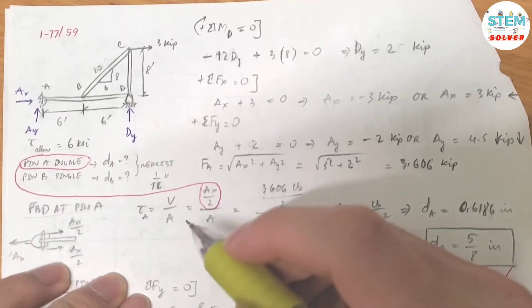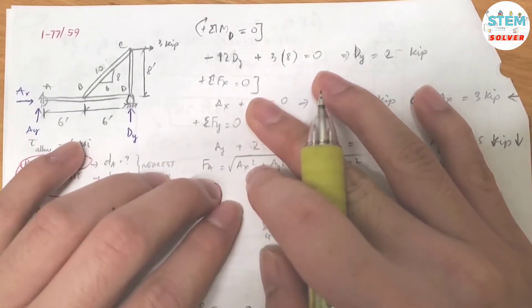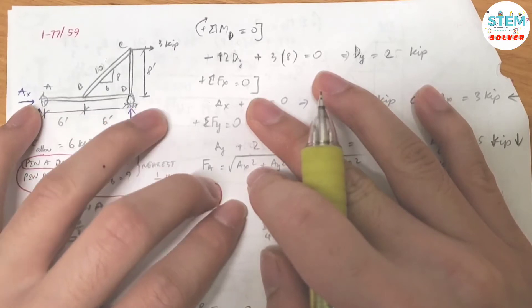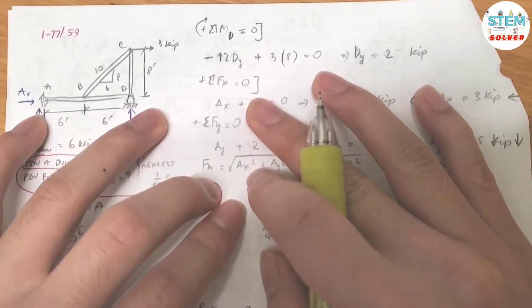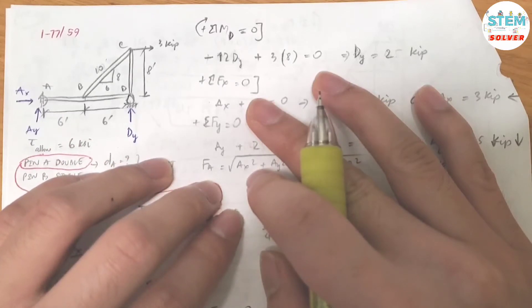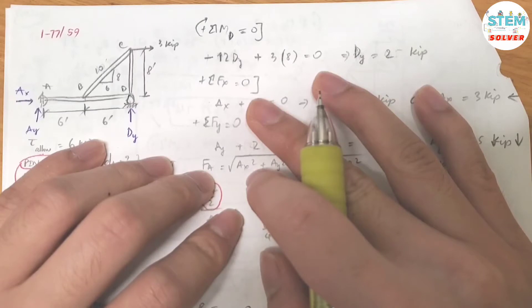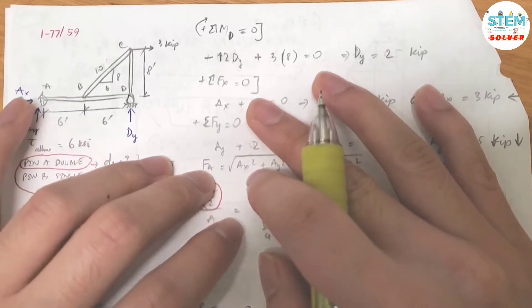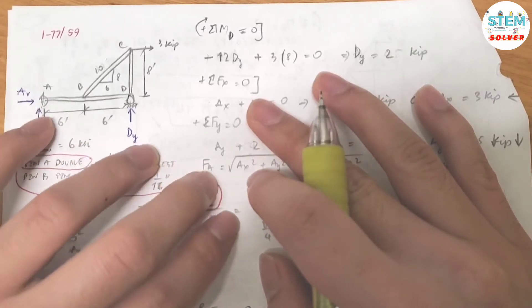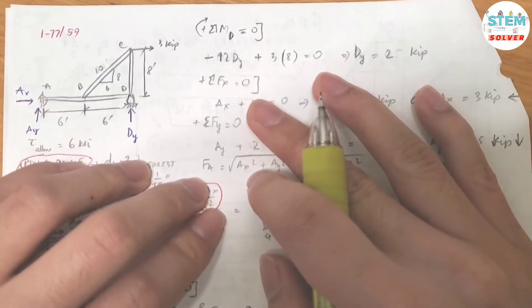First of all, we need to find the internal forces at point A and point D. In order to do that, let's use the synthesis in equilibrium. We have 3 equations: summation about x-axis, summation about y-axis, and summation of the moment. In this case, I think the best equation to use is the summation of the moment.